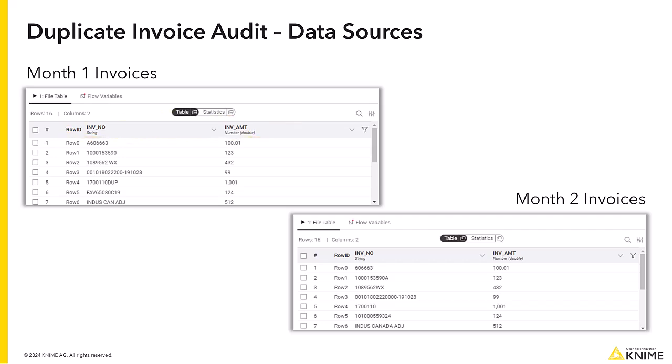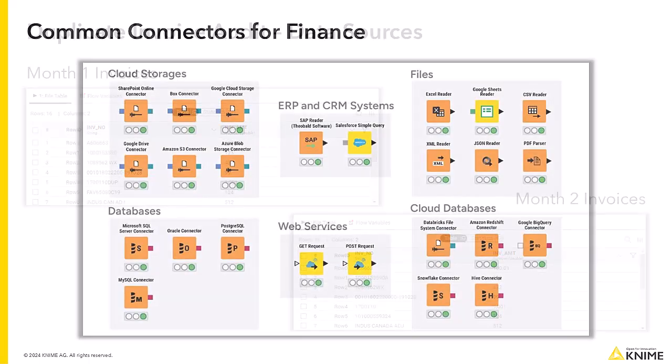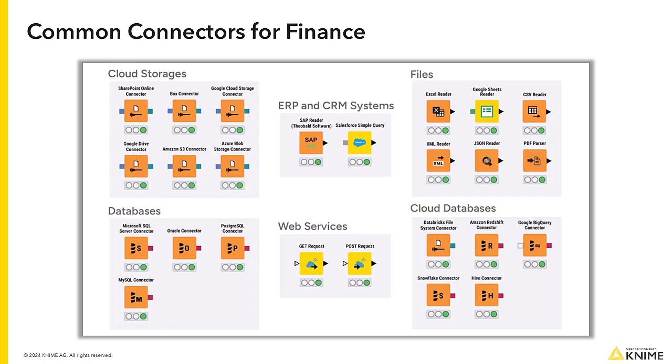In the real world, you might see datasets which include invoice numbers, supplier names, invoice dates, amounts and so on. KNIME can connect to multiple systems by using various dedicated connector nodes. But to make this example work on any laptop, we have just used Excel files for simplicity.